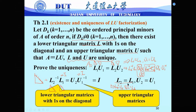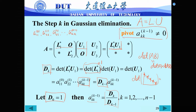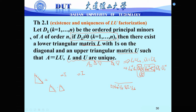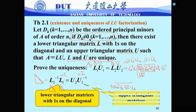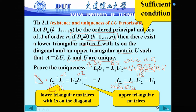The condition is that all the principal minors Dₖ are non-zero. The basic condition is that each pivot is non-zero. Since we don't know the pivots before performing elimination, we transform this condition using the ordered principal minors. Note that this is only a sufficient condition — not a necessary one.